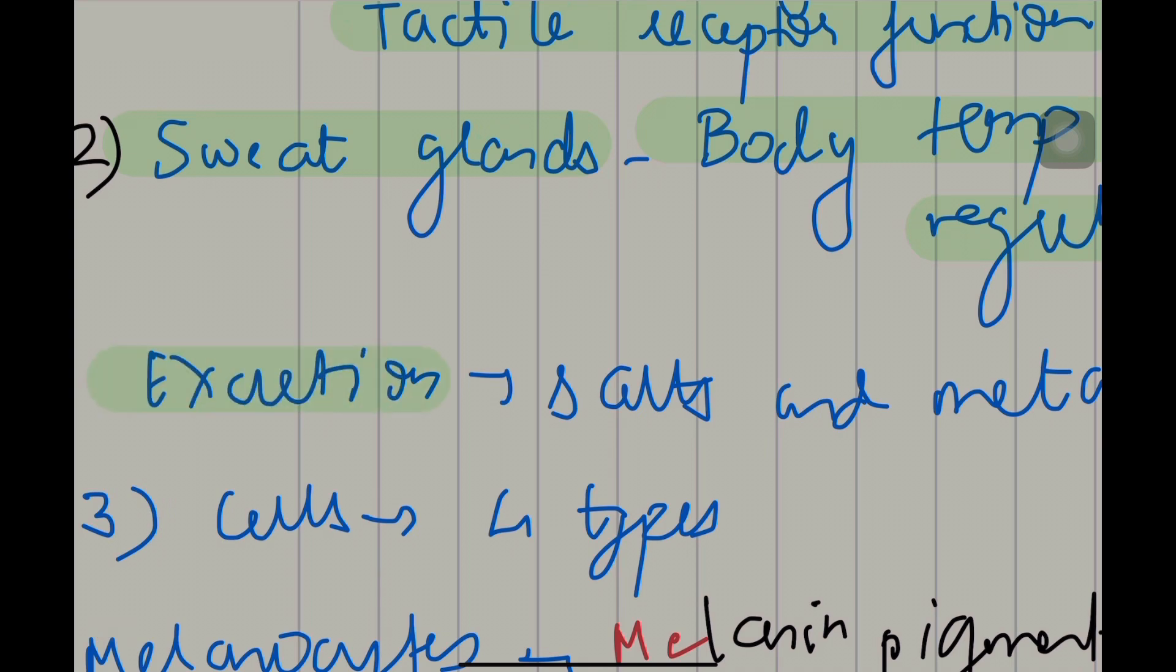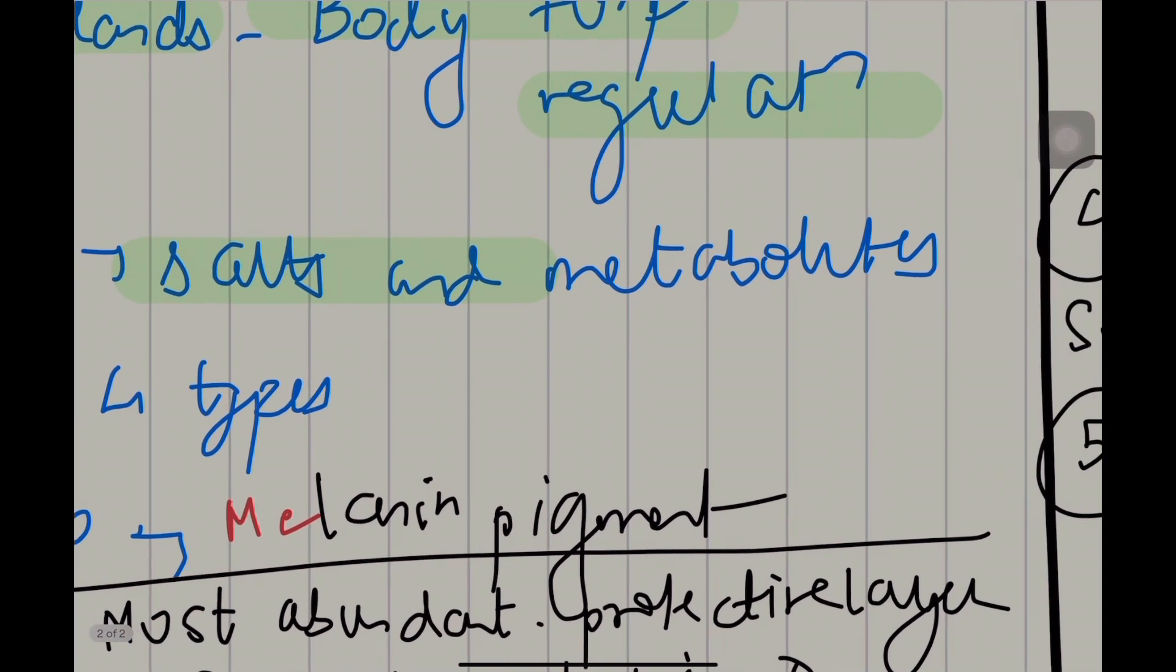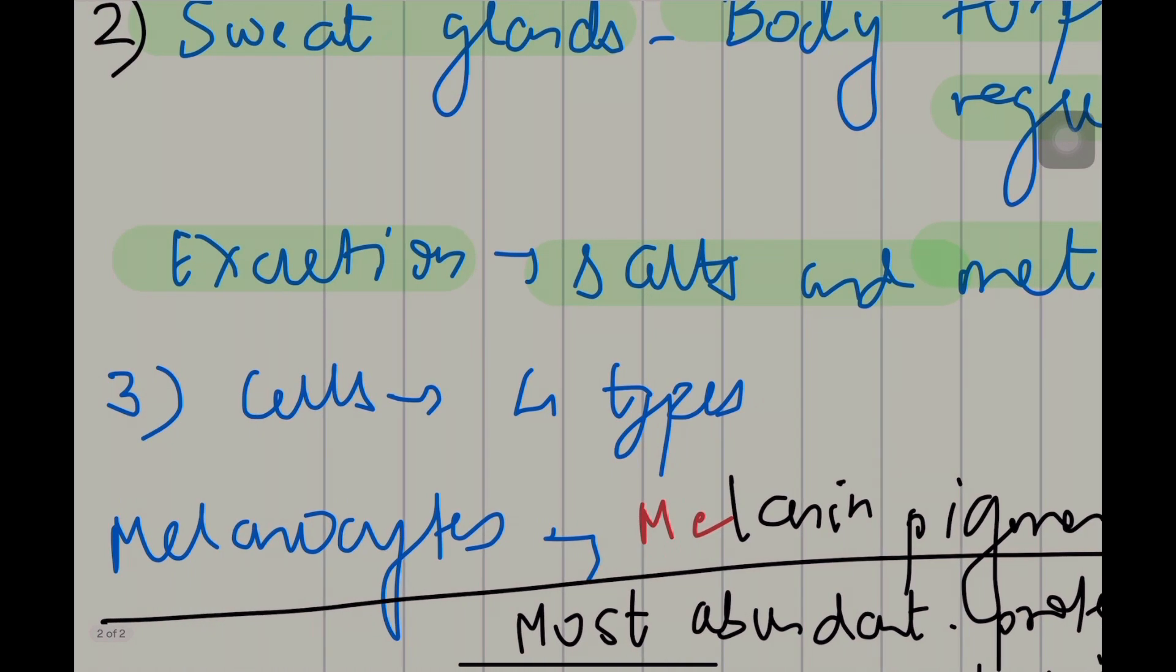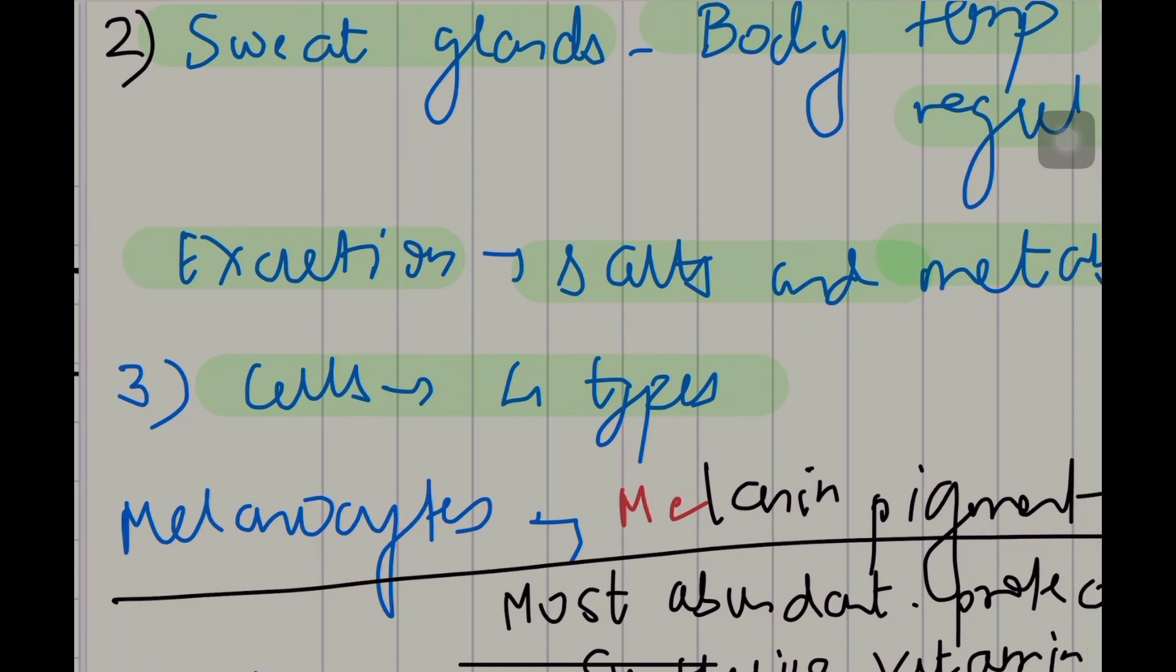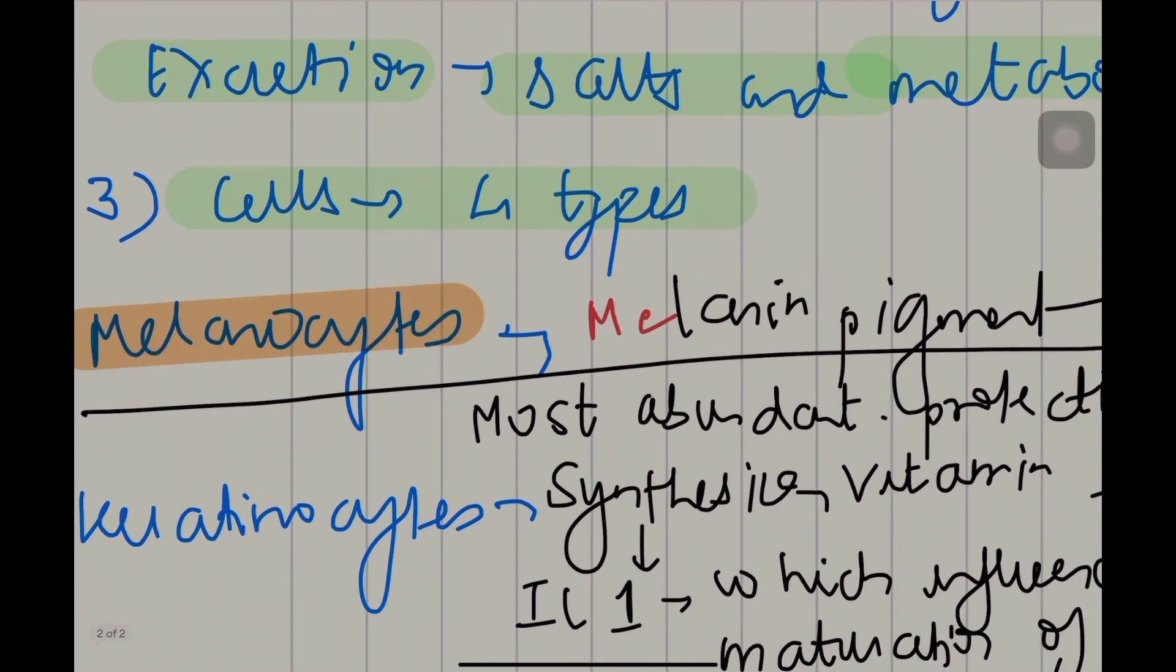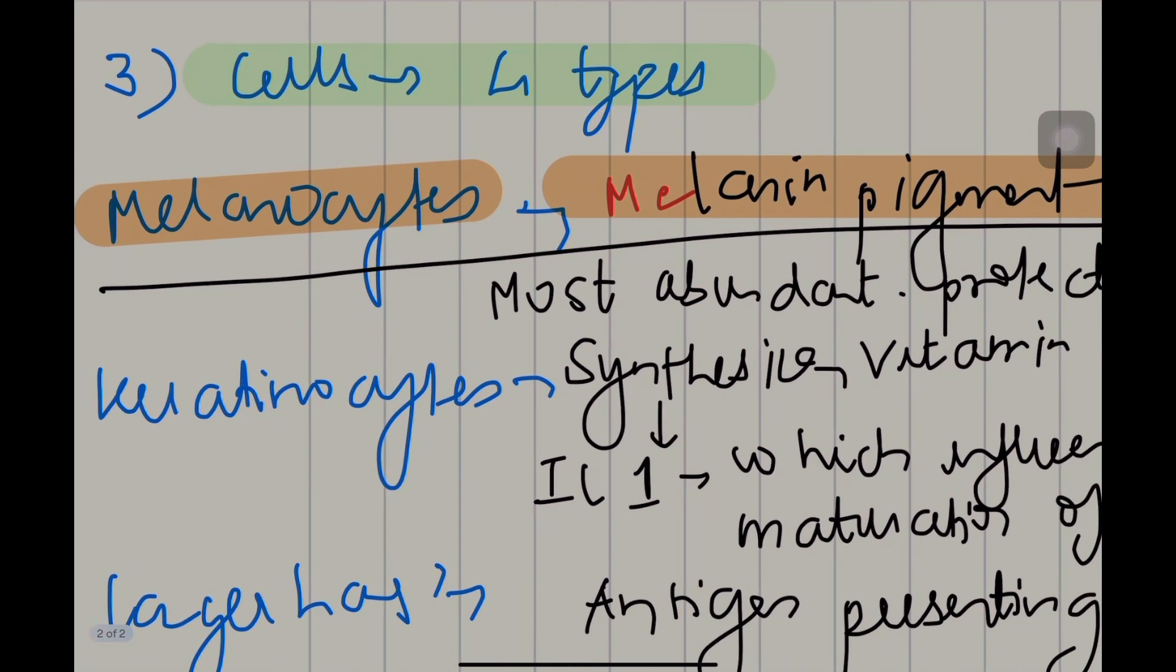What do they excrete? Salts and metabolites. Now the epidermis has four types of cells. Let us see the function of each cell. Let's change the color here. Melanocytes secrete melanin pigment.